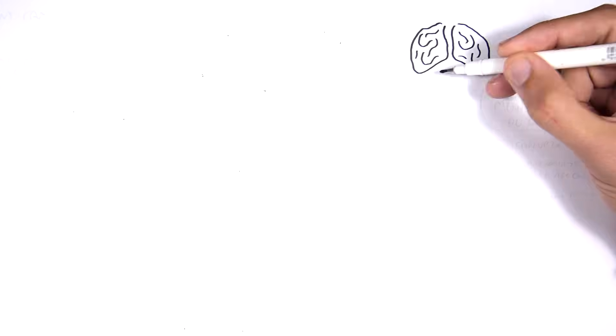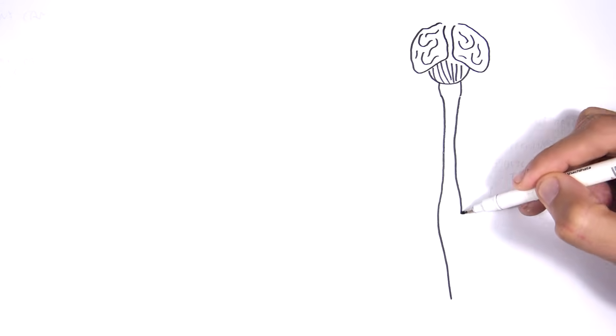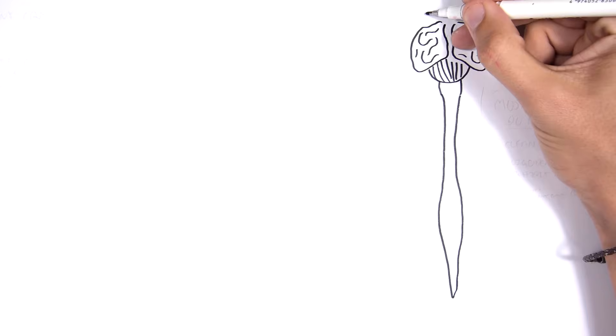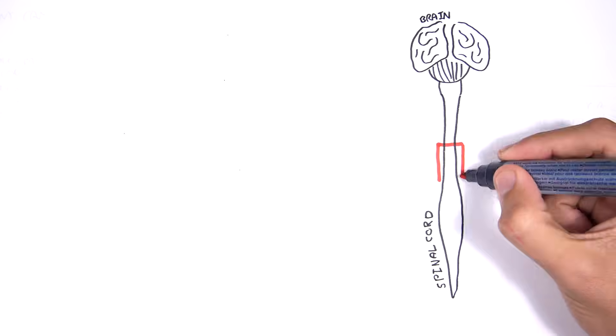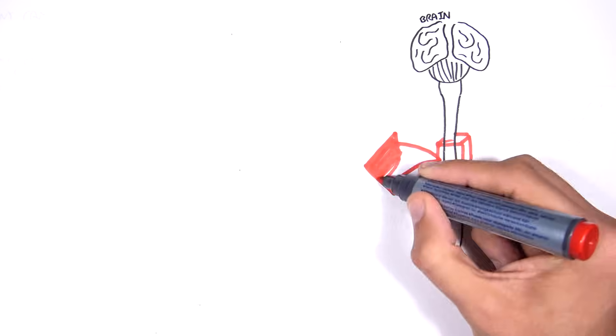But before we start, we should recap what a nerve is, as well as where it can be found. So here we have the brain and the spinal cord. The brain and the spinal cord make up the central nervous system, or CNS.